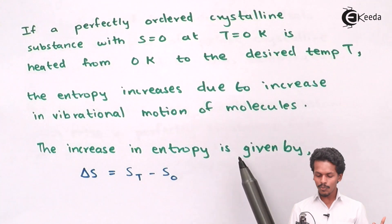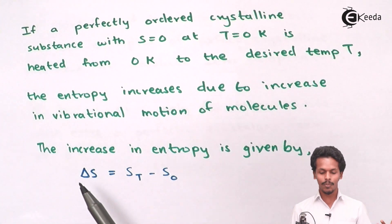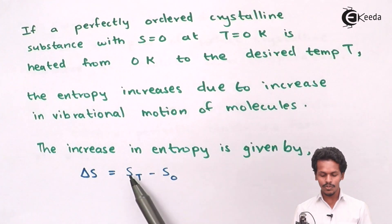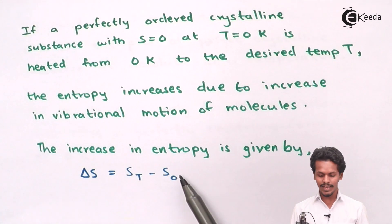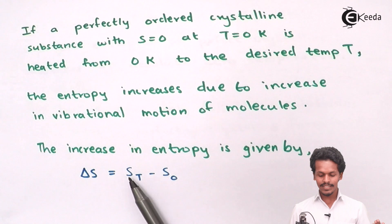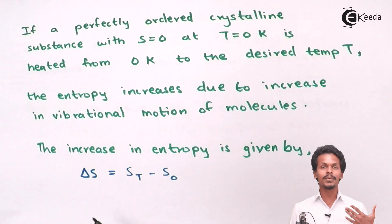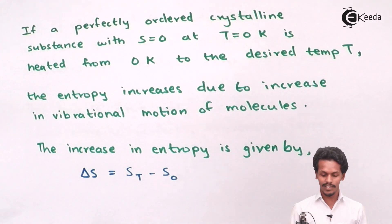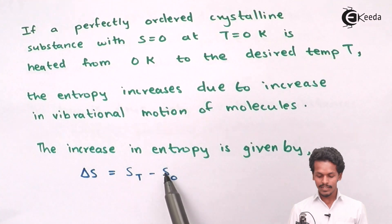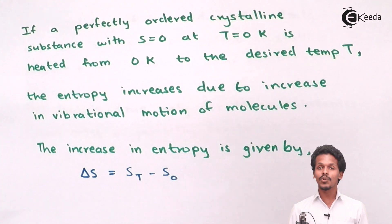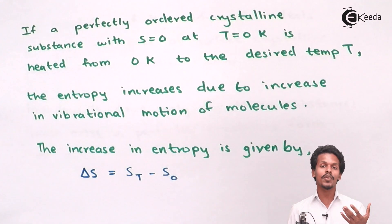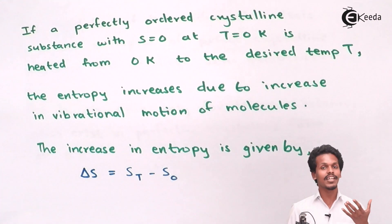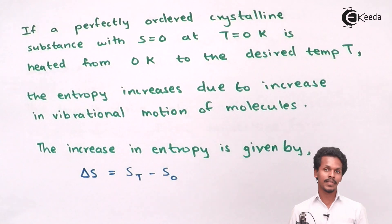The increase in entropy is given by the formula: ΔS = ST − S₀, where ST is the entropy of the substance at the desired temperature T, and S₀ is the entropy of the substance at zero Kelvin, that is, at absolute zero temperature.